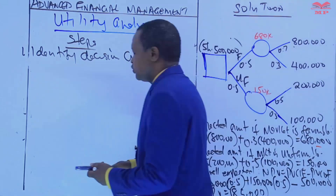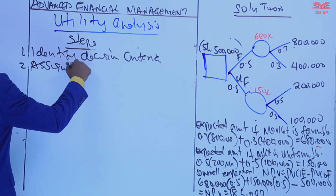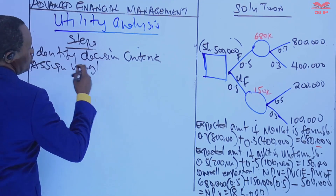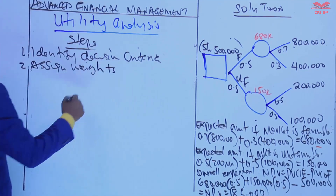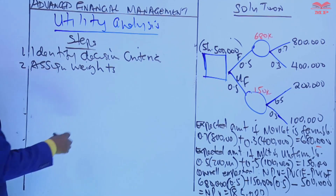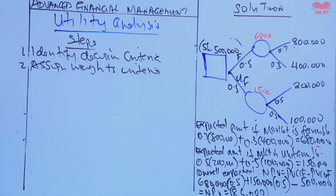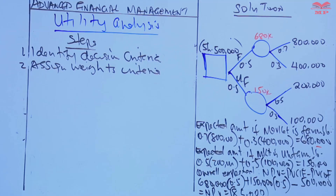Then you assign weights to the criteria. First identify the criteria, then assign numerical weights to each criterion, which reflects its relative importance compared to other criteria.